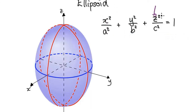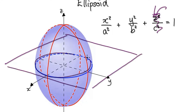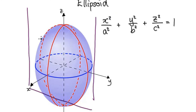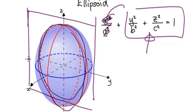So when you put 0 into z, you're going to get a circle or an ellipse — imagine a horizontal sheet of paper. When you put 0 into x, imagine a vertical sheet of paper like this. When you put 0 into x, this term disappears, giving you a circle or an ellipse along this plane.